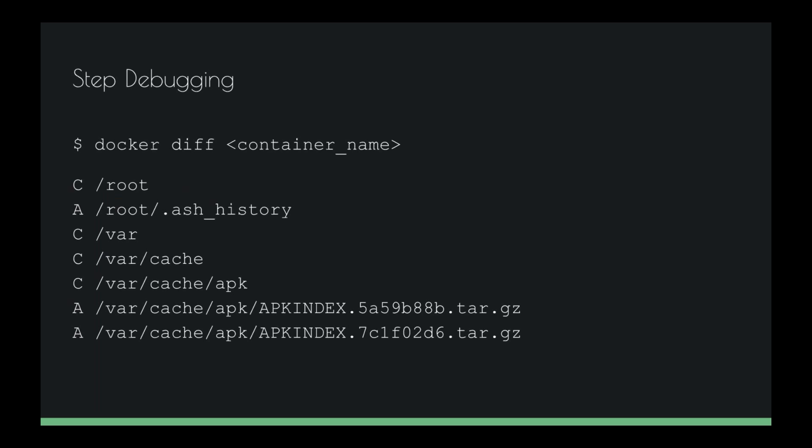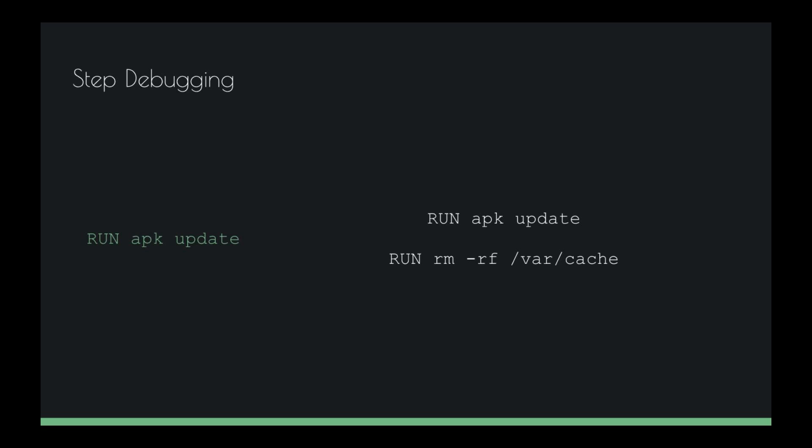And this is where docker diff comes in. In another terminal window, you run docker diff with the container name created on docker run, and you'll get output like this. The key letters: C means something changed — we've changed the slash root directory — and A means we've added a file. Just by logging in we're creating a shell history file, don't worry about that. But we notice we've changed the var/cache directory and started adding APK index files to it. You might think: we'll just add an extra RUN command to remove that cache — and immediately we've saved ourselves some space.